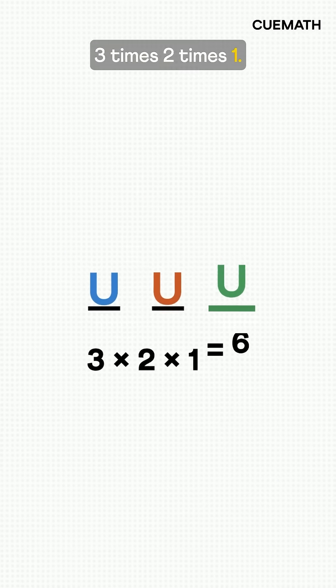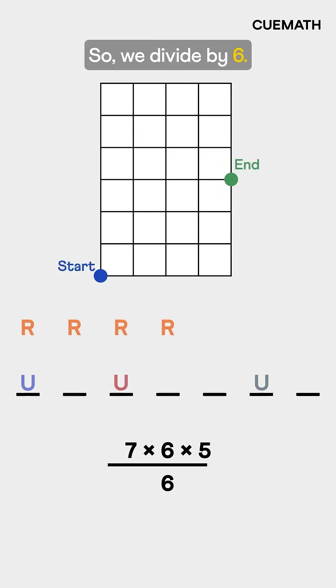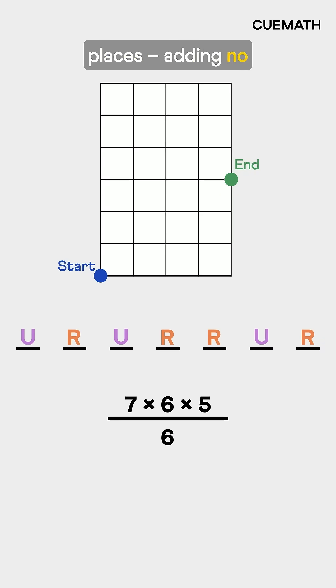Three times, two times, one. So we divide by six. Once the U's are placed, the four R's go in the remaining places, adding no new arrangements.